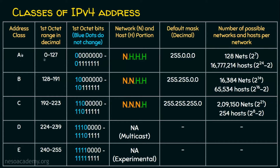If the first octet is between 0 and 127, it is class A. If it is between 128 and 191, it is class B. If it is between 192 and 223, it is class C.